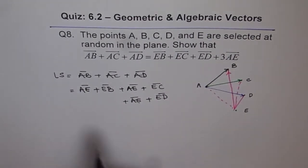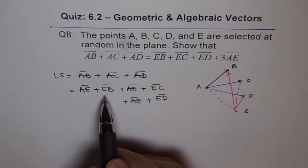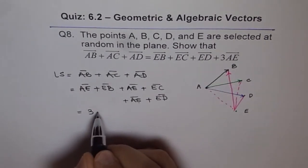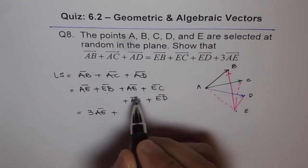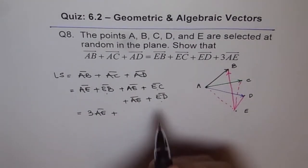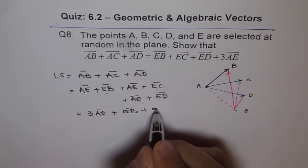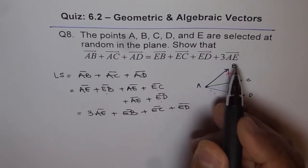Now, as you can see from here, we got three AEs and the other terms which we wanted. So it is kind of simple. Just write three times AE plus the terms which are not AEs: EB plus EC plus ED. And that is what we wanted.